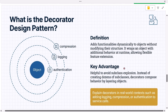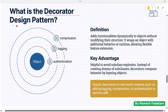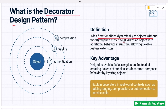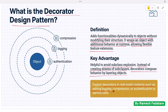Next: what is the decorator design pattern? Decorator adds functionality dynamically to objects without modifying their structure. It wraps an object with additional behavior at runtime, allowing flexible feature extension. This pattern is helpful when you want to avoid subclass explosion — instead of creating dozens of subclasses, decorators compose behavior by layering objects. Interviewers may ask you to explain decorators in real-world contexts such as adding logging, compression, or authentication to service calls.